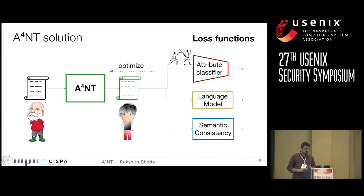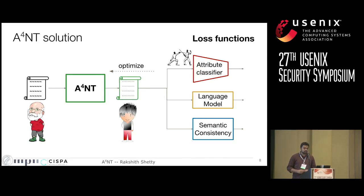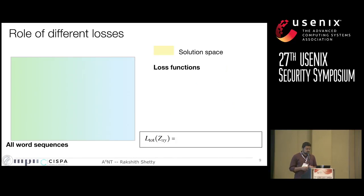For this, we present our solution ANT. It consists of the ANT network which maps the input sentence to a target style, and it learns to do this by optimizing against three different loss functions: the attribute classifier loss, which encourages ANT to change the style; the language model loss, which encourages ANT to produce valid English sentences; and a semantic consistency loss, which encourages it to preserve the meaning of the original text.